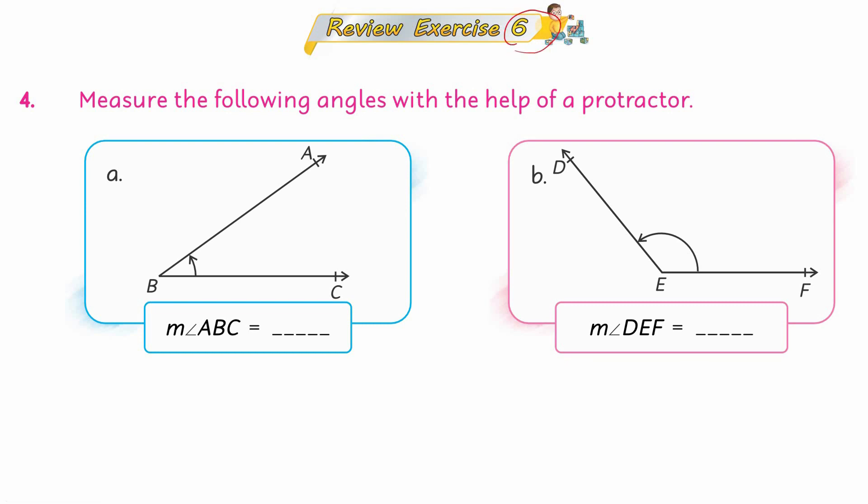Let's start with Question No. 4. Read the statement: Measure the following angles with the help of a protractor. If you look at them, you will need a protractor. I will tell you what to do. You measure and see its reading. What are you using? A protractor. The protractor has a base line.